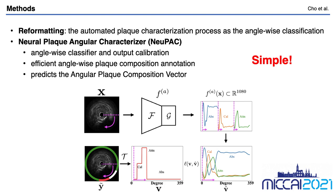We propose a novel approach called Neural Plaque Angular Characterizer, which learns to map an IVUS frame to the polar distribution of plaque composition. NeuPAC is the unified processor for automated prediction of polar distribution for plaque characterization, including an angle-wise classifier and output calibration. The key idea of NeuPAC is simple: it allows the user to annotate angle-wise plaque composition per frame efficiently and extracts the corresponding values in the form of a vector for model training. We call this vector the angular plaque composition vector, and NeuPAC directly outputs this angular plaque composition vector.